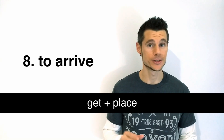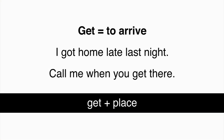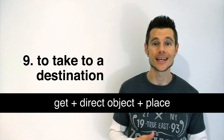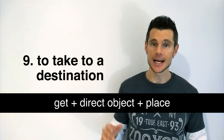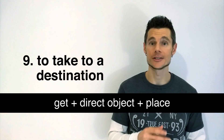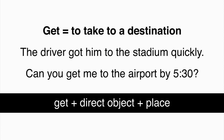Sometimes the preposition TO is not used. I got home late last night. Call me when you get there. GET can mean to take to a destination. The structure used is GET plus direct object plus place. The driver got him to the stadium quickly. Can you get me to the airport by 5:30?